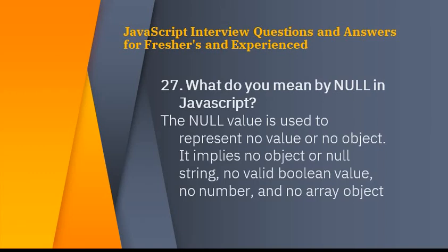What do you mean by null in JavaScript? The null value is used to represent no value or no object in JavaScript. It implies no object, null string, no valid boolean value, no number, and no array object.